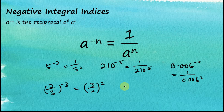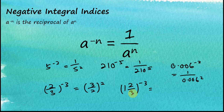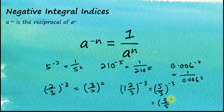The last example: 1 and 2 over 3 to the power of negative 3. For this one, we need to change the mixed fraction to an improper fraction. So this becomes 5 over 3 to the power of negative 3, and the reciprocal of 5 over 3 is 3 over 5. It becomes 3 over 5 to the power of 3. So this is how we find the values of negative integral indexes.